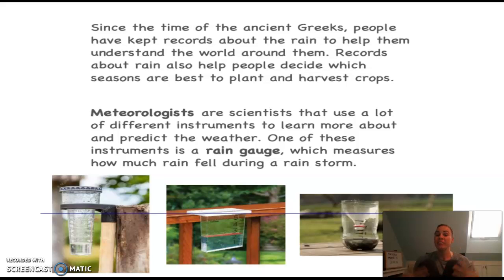Since the time of the ancient Greeks, people have kept records about the rain to help them understand the world around them. Hundreds and thousands of years ago, people knew how important the water cycle and weather were to predicting important things like what the crops, plants, and animals were going to do. Records about rain help people decide which season is best to plant certain types of crops.